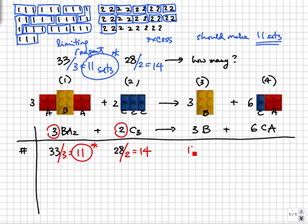Finally back to Chris question of how many CAs will she actually make. Since we have already divided BA2s into sets of 3s, we know there are 11 sets. According to the balanced equation, every set of three BA2 aggregates should produce a set of six CA aggregates. So 11 sets of BA2 should make 66 CAs.